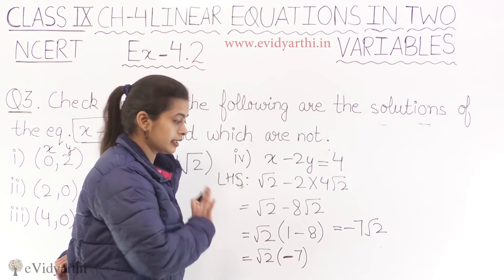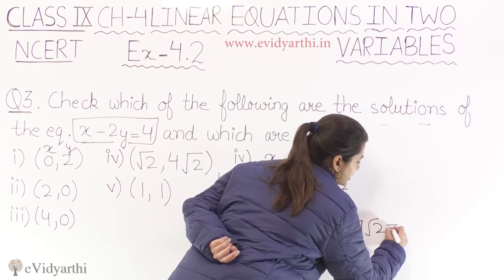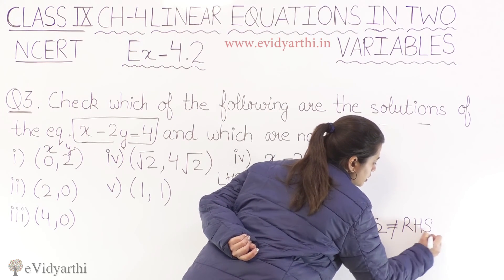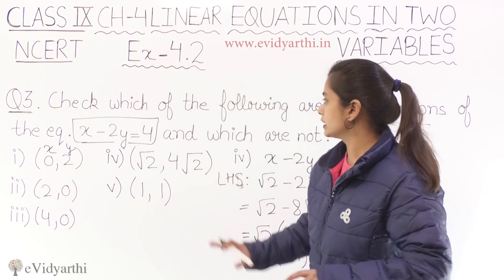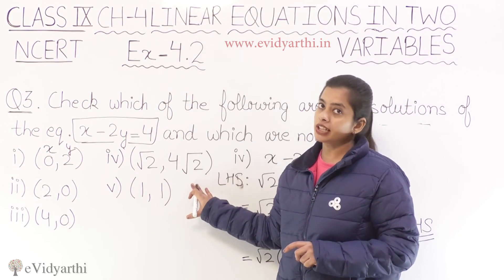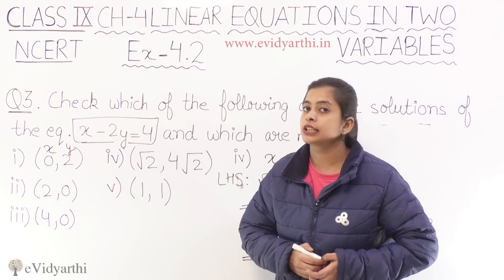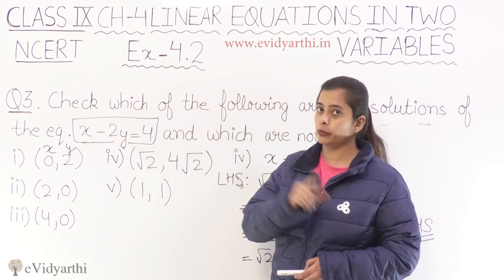So ultimately jo mere paas answer aaya hai, that is minus seven root two. Kya yeh humare right side se match karta? Mujhe nahi dikh raha hai, bilkul bhi nahi. So we can simply write it is not equals to right hand side. That is why yeh jo humari terms thi, yeh jo humara x or y ki values thi, they are not a solution of the above equation.